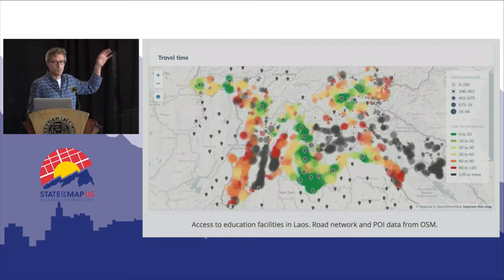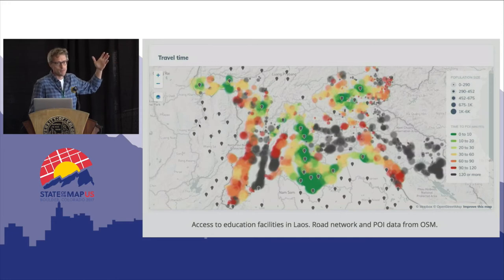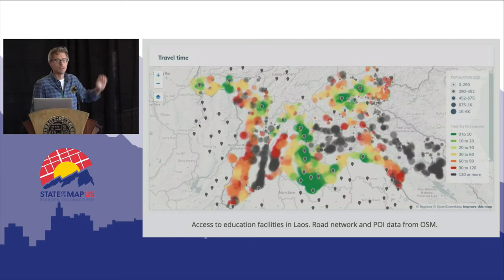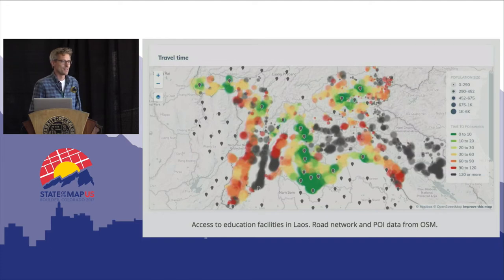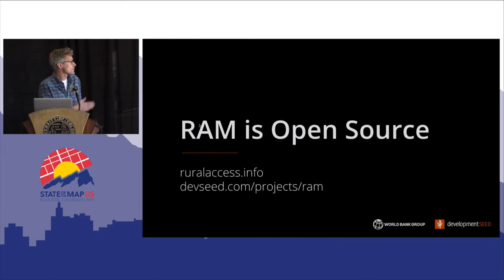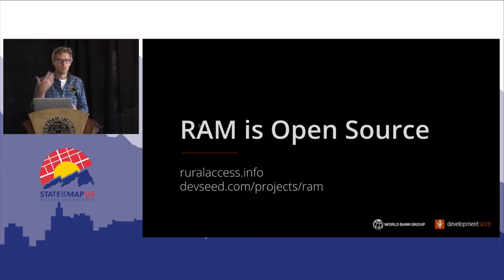This is an analysis we did for Laos — I included it because it's a nice picture. It shows accessibility to education facilities near Vientiane, the capital of Laos, all based on OSM data. If you want to know more about the project, we have a description on our website — please go check it out. Both myself and Lee will be around if you have further questions. Thanks.